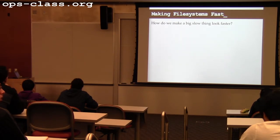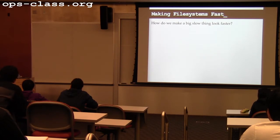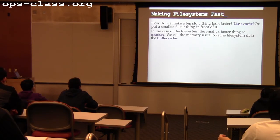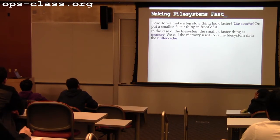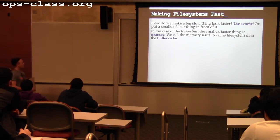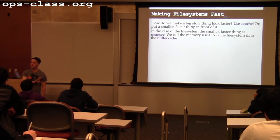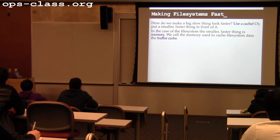We think about the hierarchy of storage on your computer, starting with registers at the top and big slow spinning disks at the bottom. A lot of what we do in operating systems is find ways to deal with this hierarchy and figure out where to put things to optimize performance. We're going to use memory as a cache for the file system. When we talk about memory used to cache file system data, we call that a buffer cache.